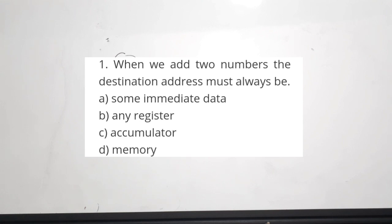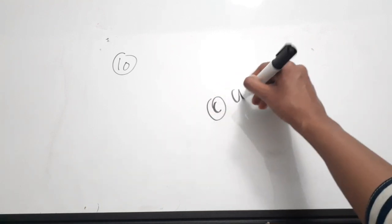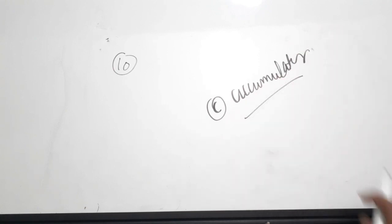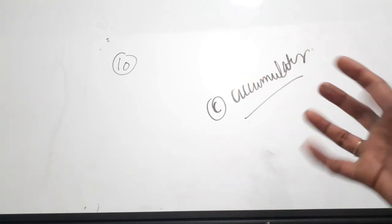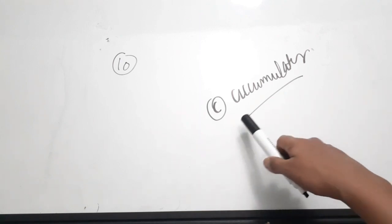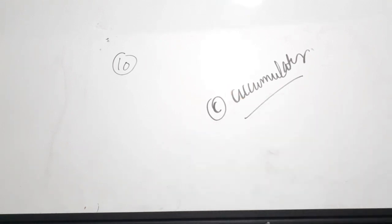Tenth question, also from 8051: when we add two numbers, the destination address must always be — A: some immediate data, B: any register, C: accumulator, D: memory. When performing addition in 8051, the result is always stored in the accumulator register, which is used for arithmetic and logical operations. The correct answer is option C: accumulator.